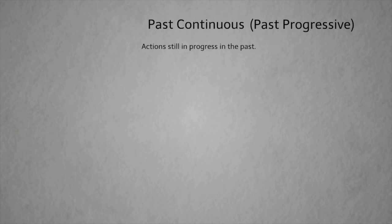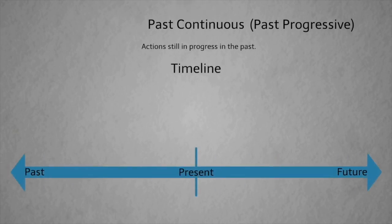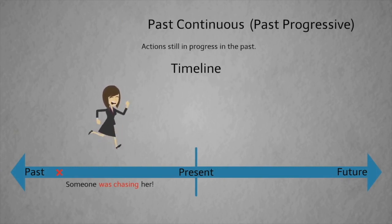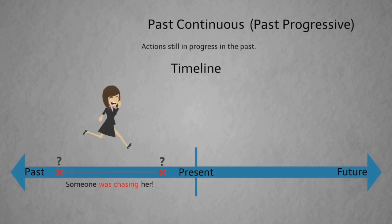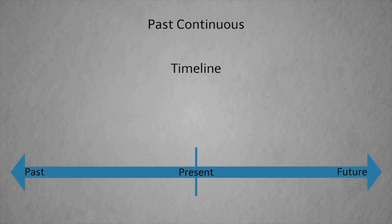The past continuous (also called past progressive) is used to talk about an action in progress in the past. Using a timeline with the example 'someone was chasing her' — someone started chasing her at some point in the past and stopped at some point in the past; we're talking about the whole period from start to finish. We also use past continuous for background events — 'on a cold dark night Alisa was working late at the office' sets the background of the story.